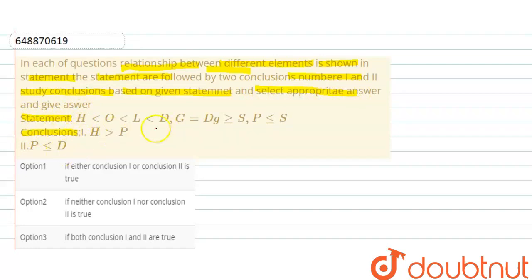Here, which conclusion is correct? According to this statement, we need to find out. Conclusion first is h greater than p. H here is given, and p here is given. In between, here is relation.